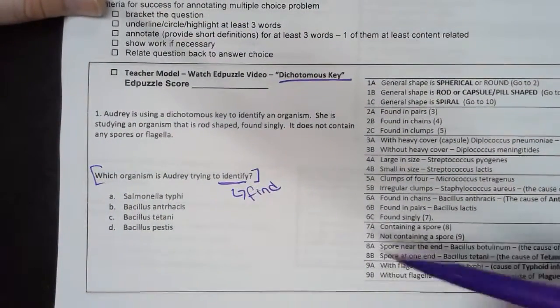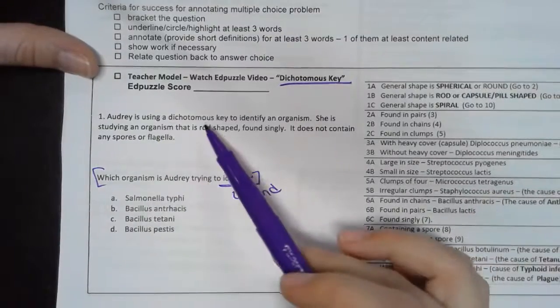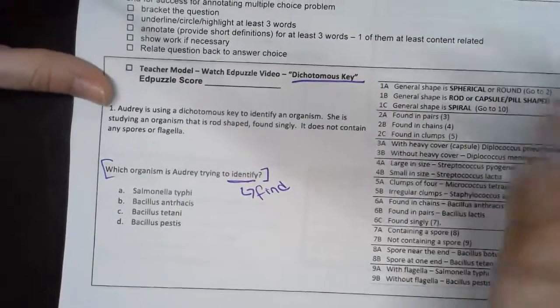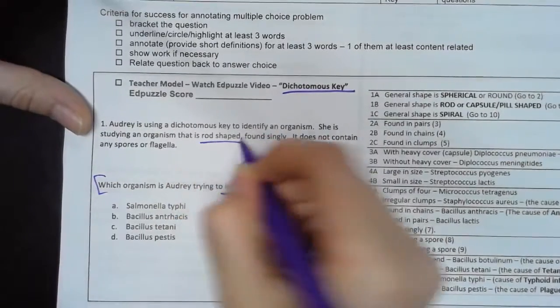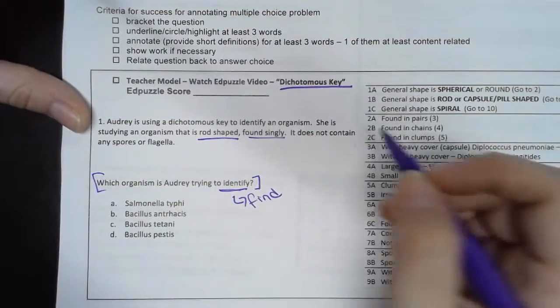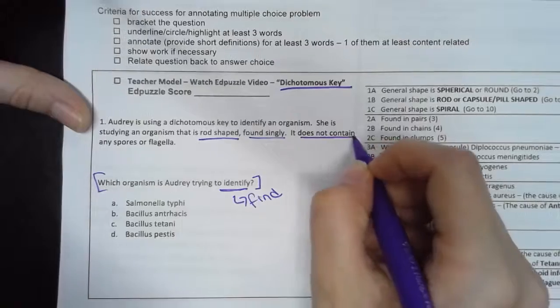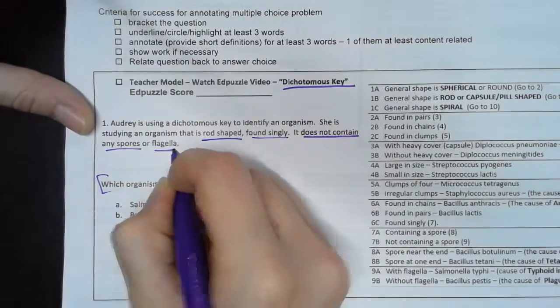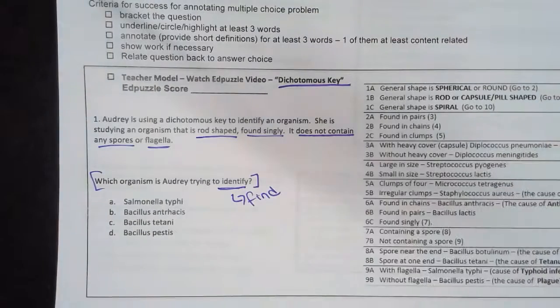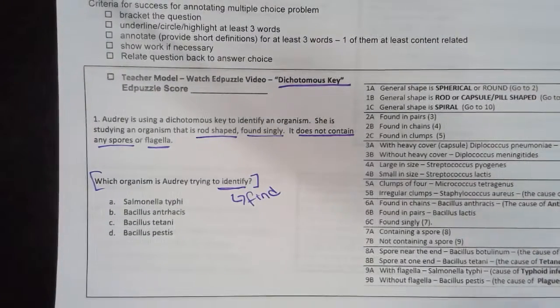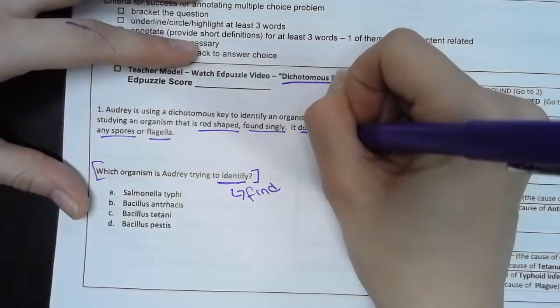Audrey is using a dichotomous key to identify an organism. She is studying an organism that is rod-shaped, found singly, it does not contain any spores or flagella. I underline the characteristics that it showed me to do. Okay, I'm going to just box this 'do not.'